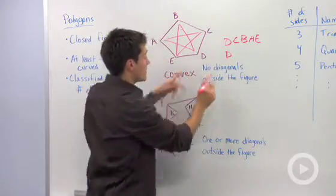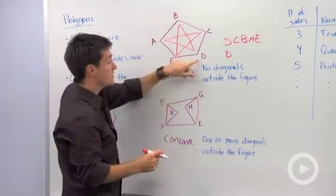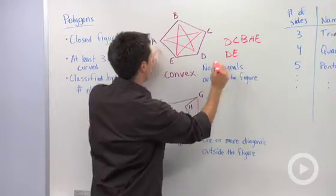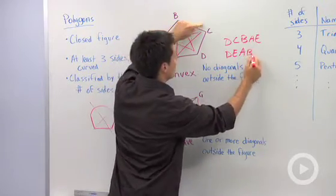The other one, if I'm starting with D, is to go in the opposite direction. So I could say this is D, E, A, B, C.